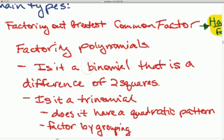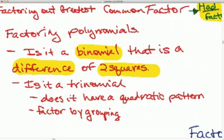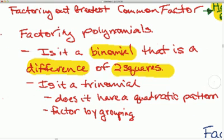See if it's a difference of two squares. Is it a binomial, meaning two expressions? Are they subtracted? And are they both perfect squares? If so, there is a way of factoring that: x squared minus y squared.